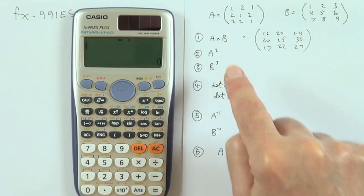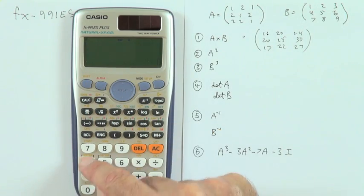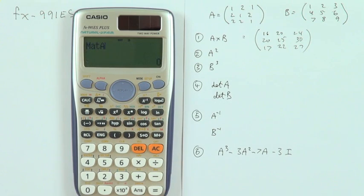A squared. What's the square of that matrix? Another tedious calculation. Simply pop into the matrix, pull out matrix A with number three, and x squared, square it. There you go. There's the square of the matrix.